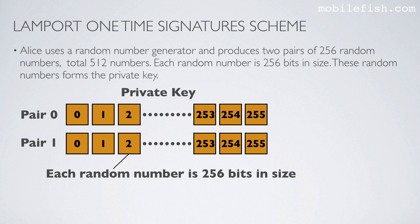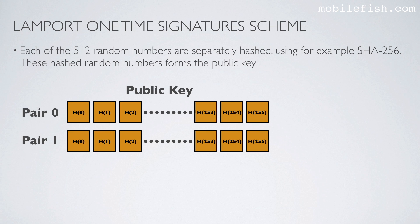Alice uses a random number generator and produces two pairs of 256 random numbers — 512 numbers total. Pair 0 has 256 random numbers and pair 1 also has 256 random numbers. Each random number is 256 bits in size. These random numbers form the private key. Each of the 512 random numbers are separately hashed using, for example, SHA-256, and these hashed random numbers form the public key.